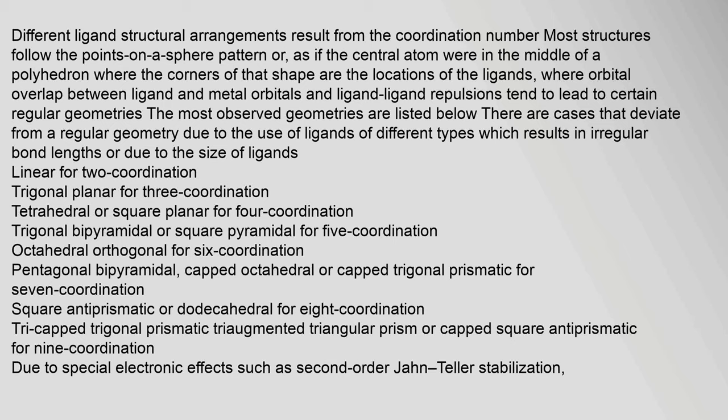Orbital overlap between ligand and metal orbitals and ligand-ligand repulsions tend to lead to certain regular geometries. The most observed geometries include: linear for 2-coordination; trigonal planar for 3-coordination; tetrahedral or square planar for 4-coordination; trigonal bipyramidal or square pyramidal for 5-coordination; octahedral for 6-coordination; pentagonal bipyramidal, capped octahedral, or capped trigonal prismatic for 7-coordination; square antiprismatic or dodecahedral for 8-coordination; and tricapped trigonal prismatic or capped square antiprismatic for 9-coordination.